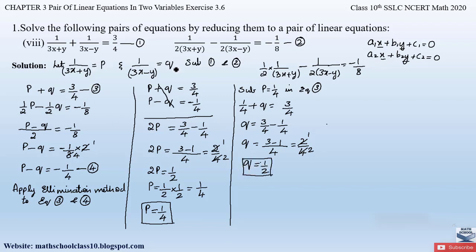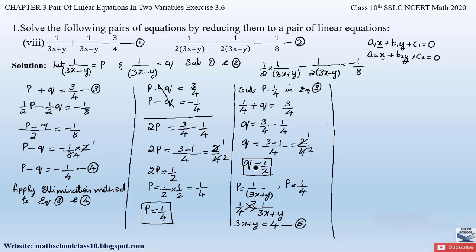Initially we assumed p = 1/(3x+y) and we obtained p = 1/4. Equating: 1/4 = 1/(3x+y). Cross-multiplying gives 3x + y = 4. Let this be equation 5. Similarly, q = 1/(3x−y) and we obtained q = 1/2. Equating: 1/2 = 1/(3x−y). Cross-multiplying gives 3x − y = 2. Let this be equation 6.